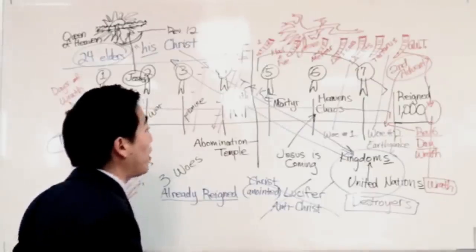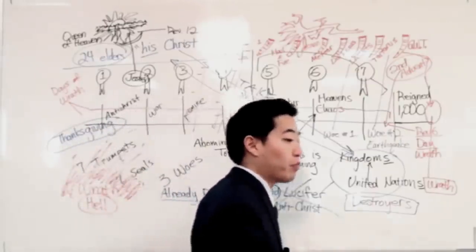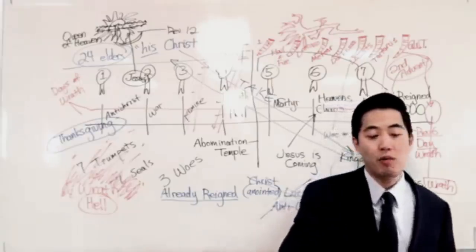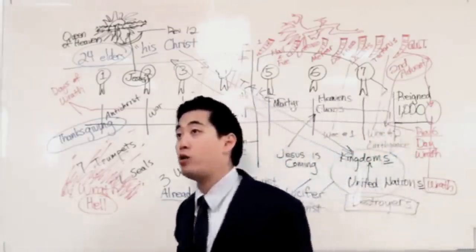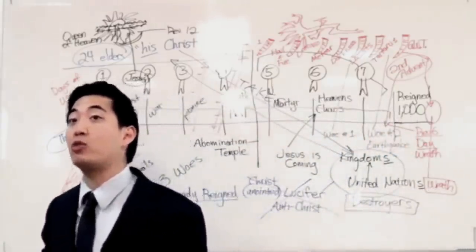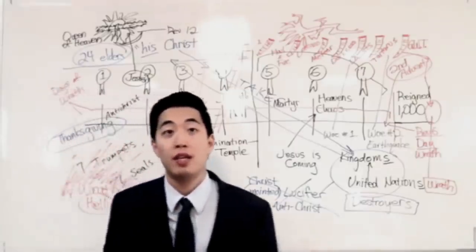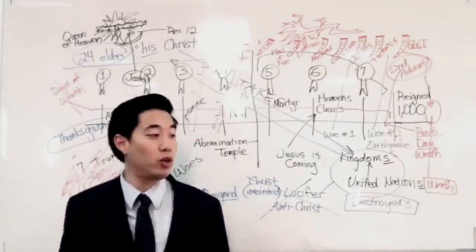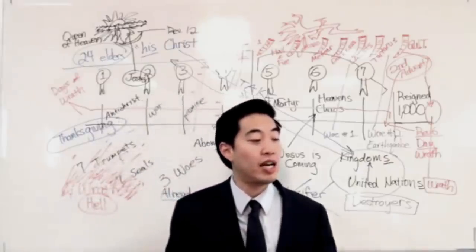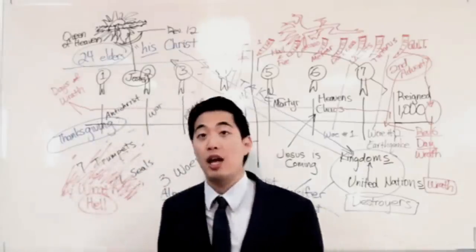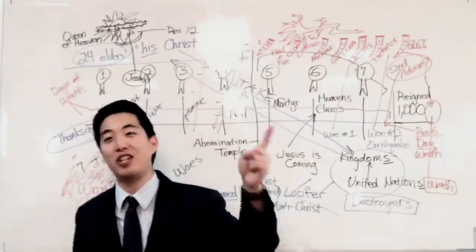Nimrod, Sennacherib, Nebuchadnezzar, the Roman Caesar. And then the horns, they all match up with those kingdoms, but it adds three more horns. That's going to include England, it's going to include the United States, it's going to Russia, and that will be covered in our next Revelation teaching.